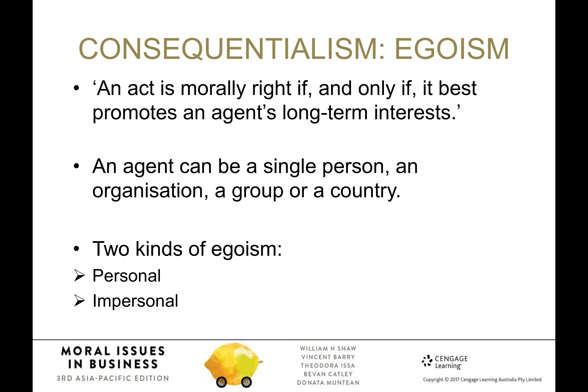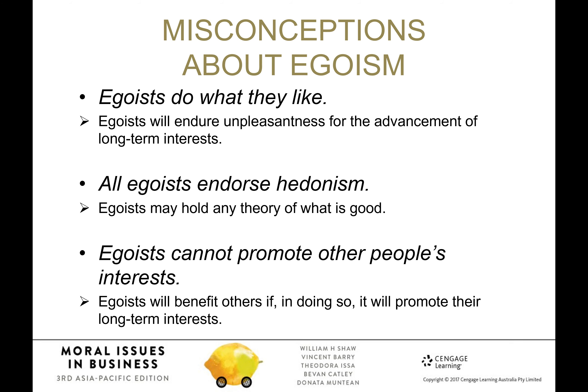An agent can be a single person, an organisation, or a country. There are two types of egoism: personal egoism and impersonal egoism. Personal egoism is based on some relationship that occurs between you and another. Impersonal egoism means you're behaving in a particular way without a direct connection to the consequences that you may be causing on others — it's an impersonal process.